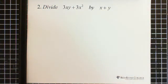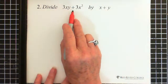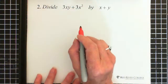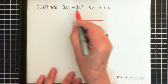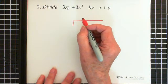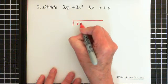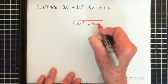Okay, so we have a division of 3xy plus 3x squared by x plus y. So we are dividing, and again the term with the highest power goes first. So that's our 3x squared, and then we have our 3xy.